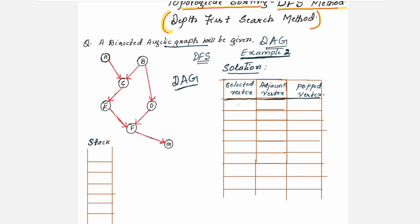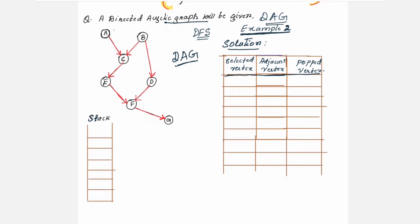Let me choose vertex A. The one which I am choosing, A, I will first place it in the stack. I will select that vertex and find its neighbors. For A, the neighbor is only one vertex, C. So C becomes the adjacent vertex and C is also placed in the stack.